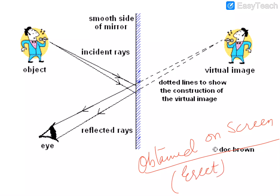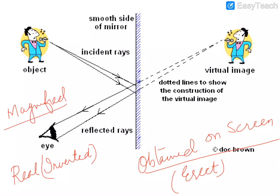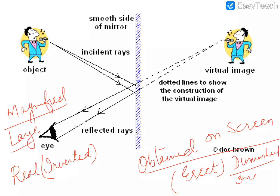But the difference is that in case of a virtual image, it cannot be obtained on a screen. So remember: virtual image is always erect, whereas the real image is always inverted. Real image is always inverted. You should also know the difference between diminished and magnified. Magnified means the size of the image is large, and diminished means the size of the image is small.